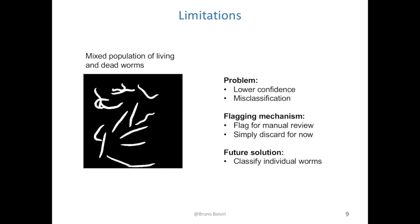This image was misclassified with lower confidence than usual, and this confidence level could be used in the future to flag images for manual review. But ideally, if we could classify individual worms instead of entire populations, maybe that would negate the need for manual review.